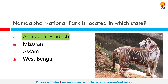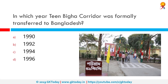The National Park harbors the northernmost lowland evergreen rainforests in the world. In which year was the Teen Bigha Corridor formally transferred to Bangladesh? The correct answer is 1992. The Teen Bigha Corridor is a strip of land belonging to India on the west of the Bangladesh border, which in September 2011 was leased to Bangladesh so that it can access its Dahagram-Angarpota enclaves.